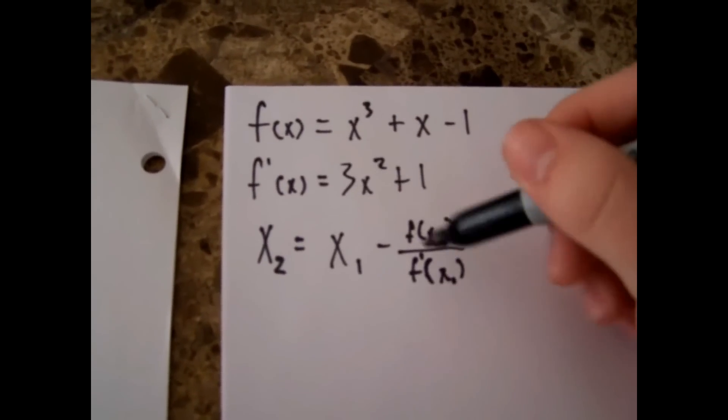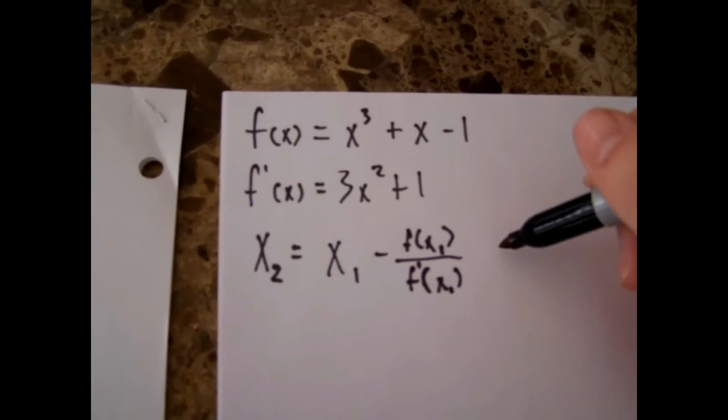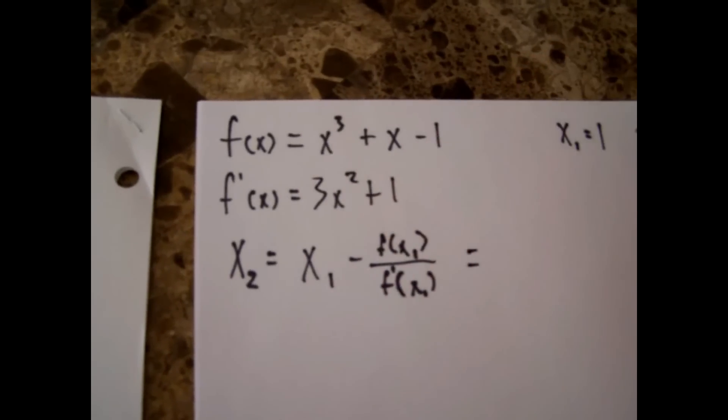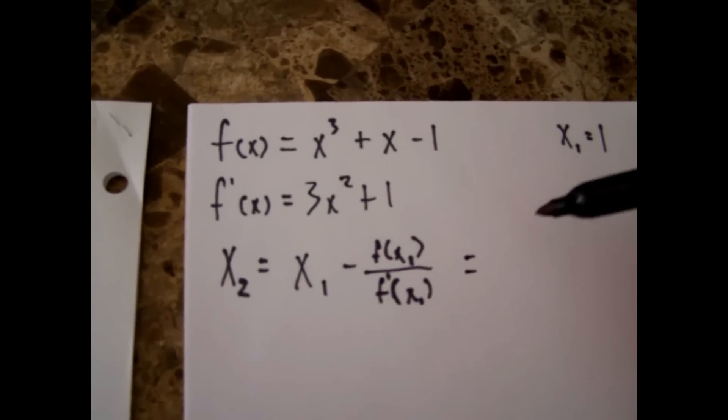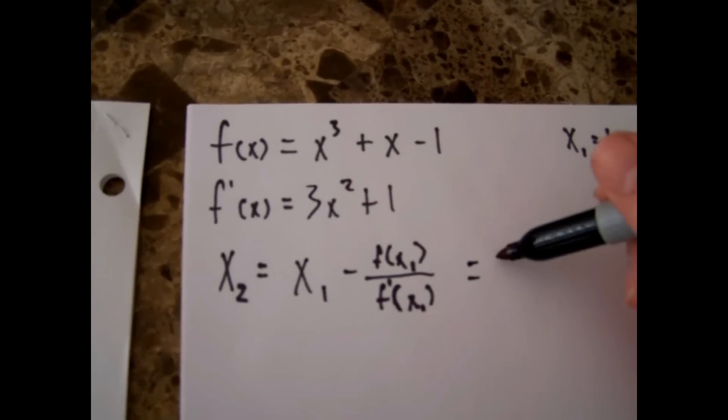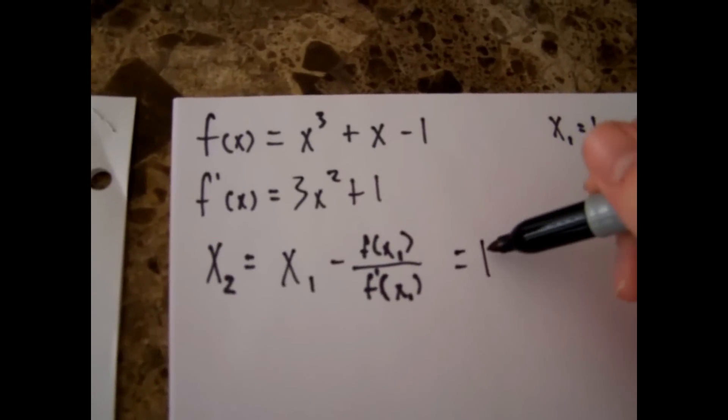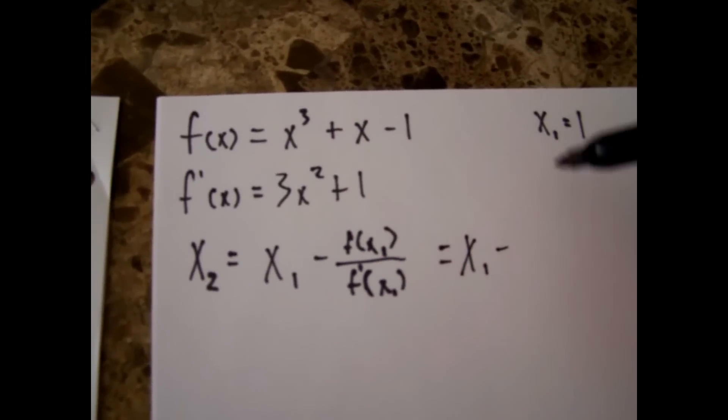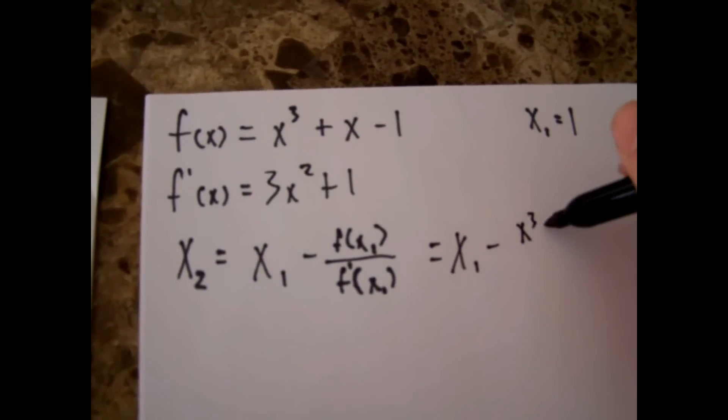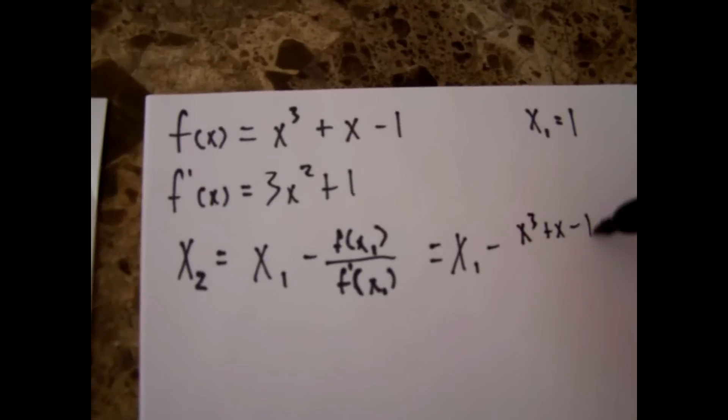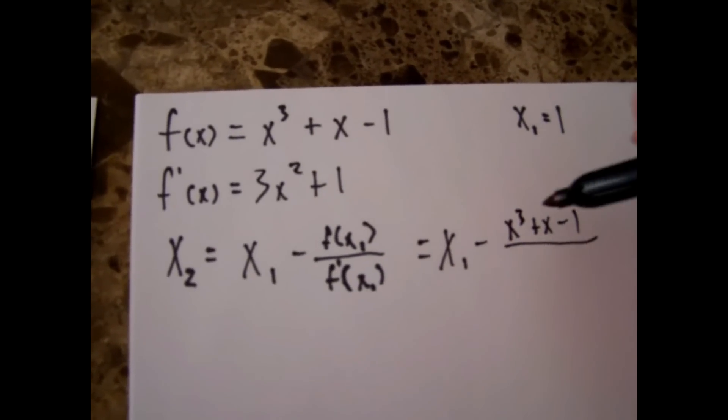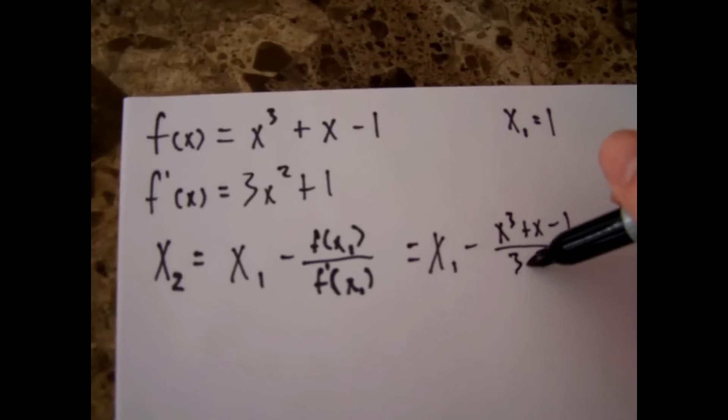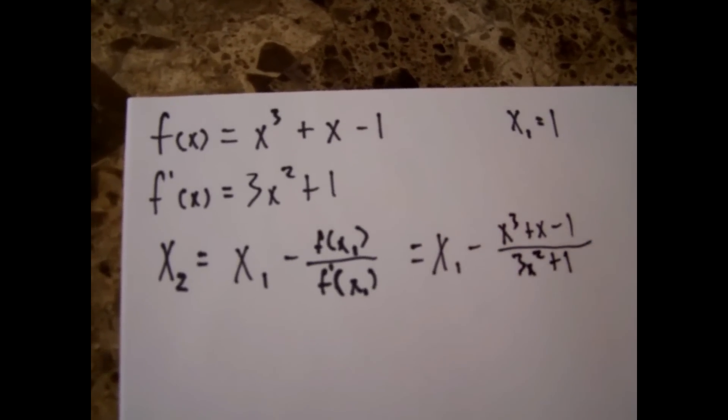So first off you have to piece your function together before you can plug anything in. So this should be equal to your initial guess which in this case will be one. I'll just write it as x₁ though still. And then f(x) on top so it should be x³ + x - 1, and that should be over your f'(x) which is 3x² + 1.